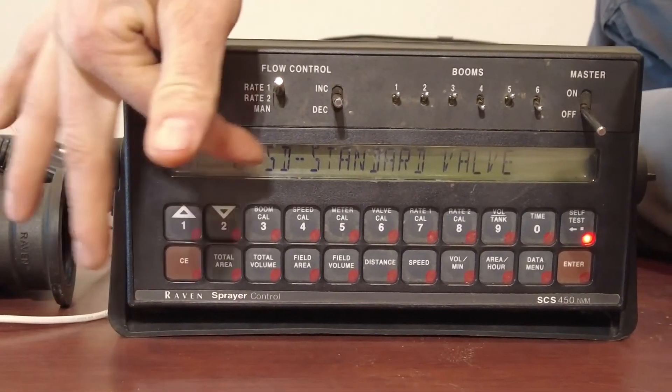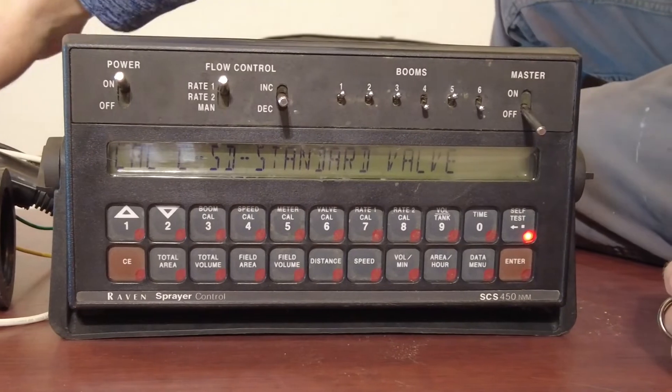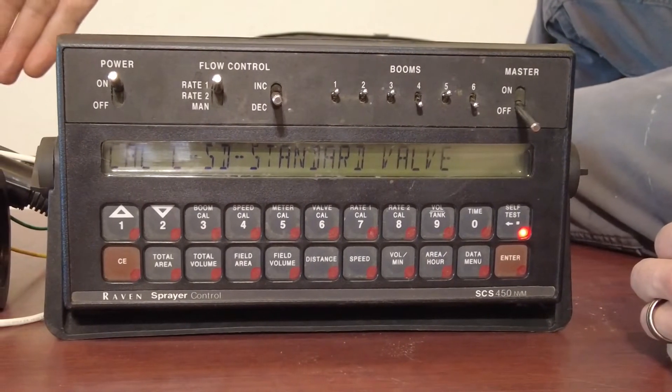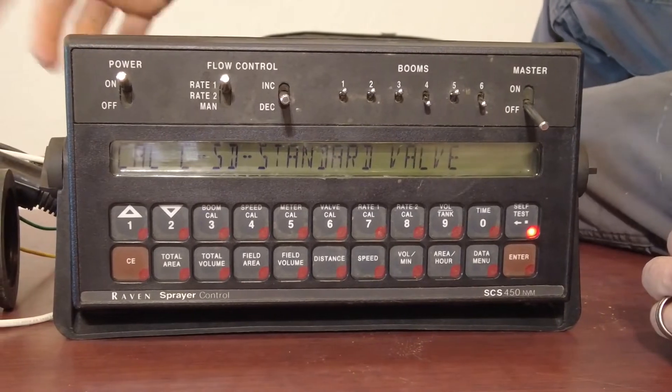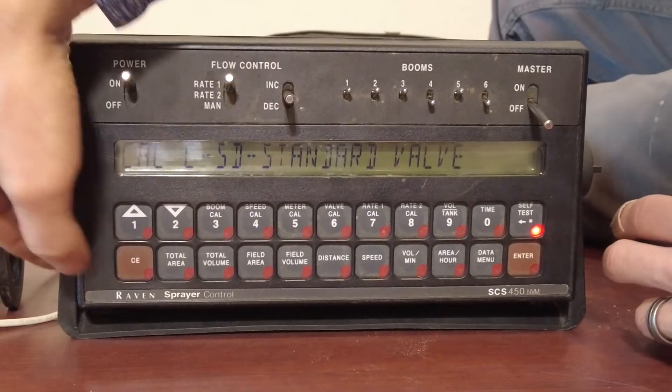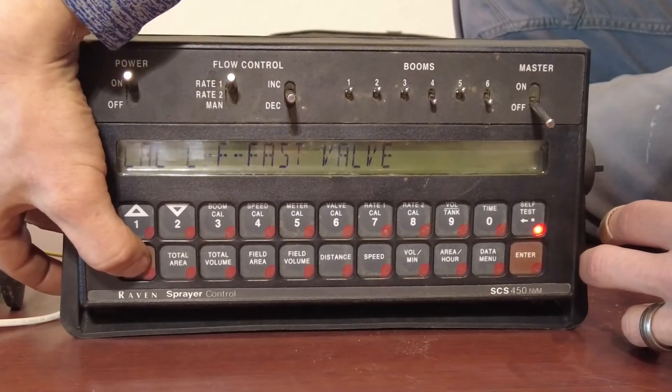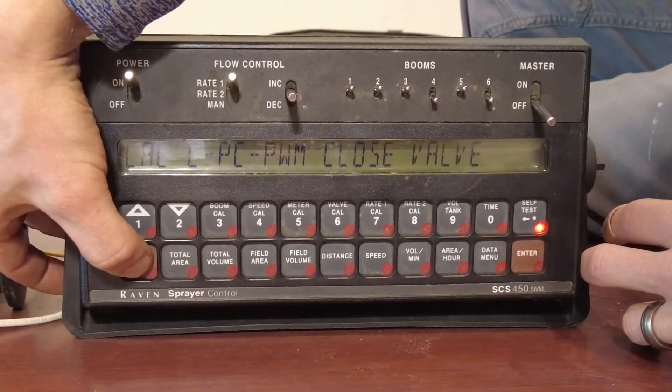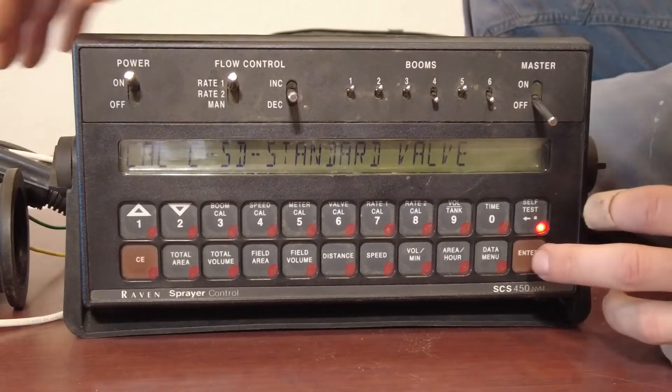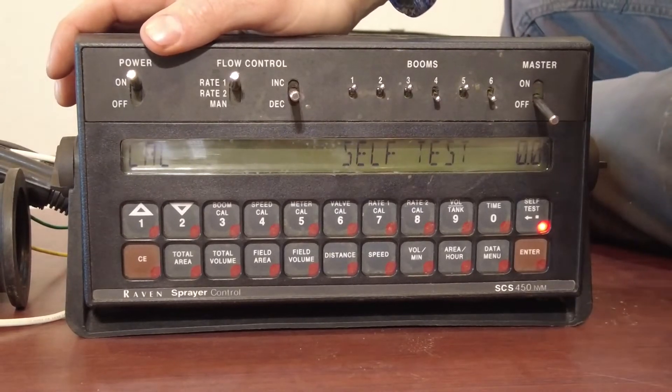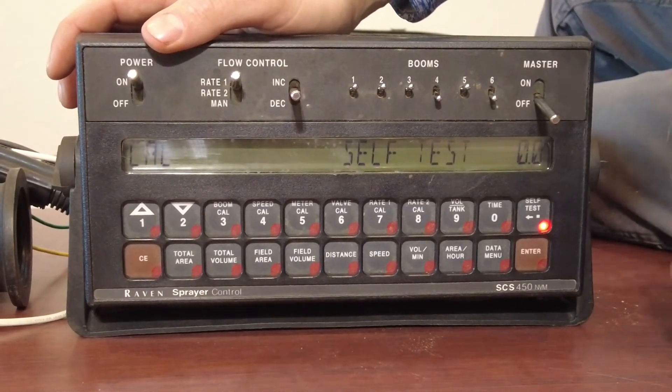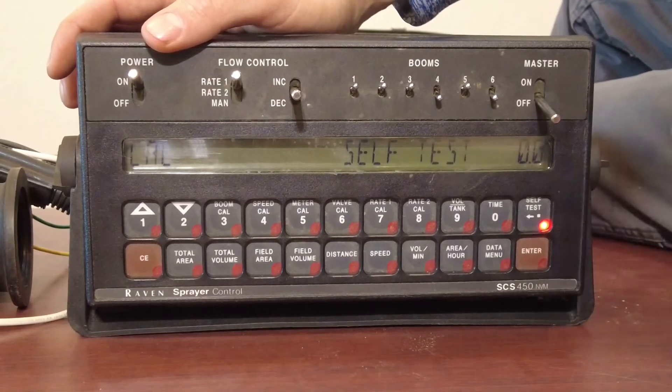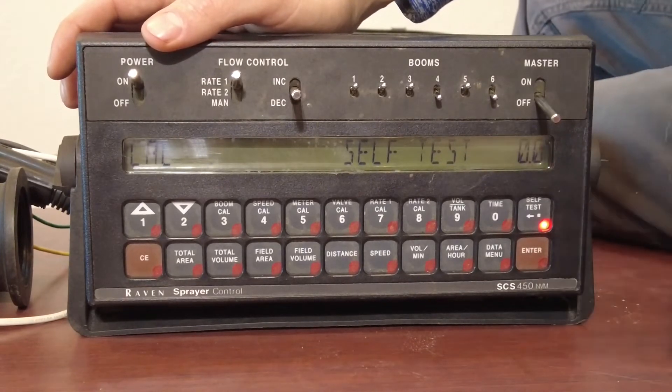The next one it's going to ask us is what kind of a valve do we have? In this system, we're using a liquid standard valve with a valve cal of 2123. So we're going to scroll. It's not a fast. It's not a PWM. It is a standard valve. Enter. Most liquid systems have got a standard valve unless you have a PWM controller on your hydraulic pump.